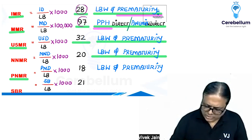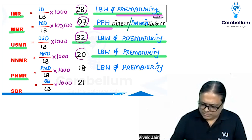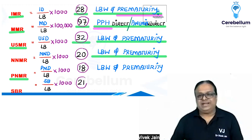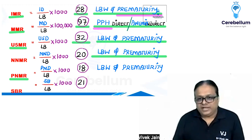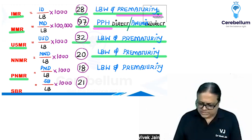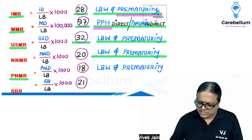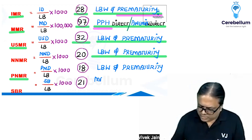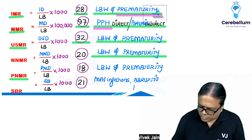These are the current values of India that you have to memorize — all per thousand live births, except MMR which is 97 per one lakh live births. For stillbirth rate, no national-level study has been done like for the other parameters, but smaller studies have shown that maternal infections and abruptio placentae are the commonest causes of stillbirths in the country.